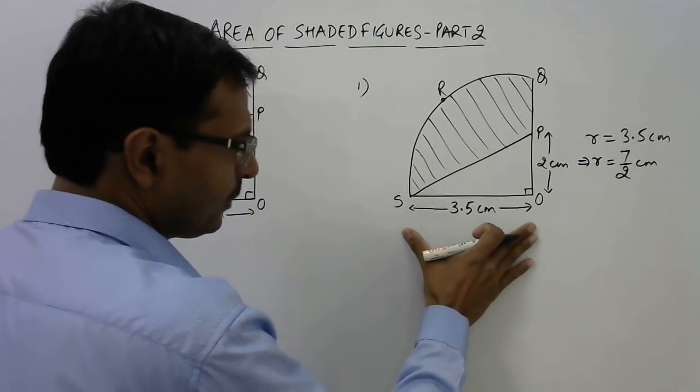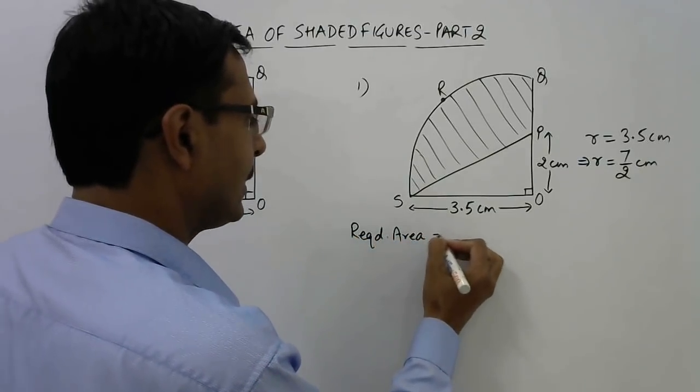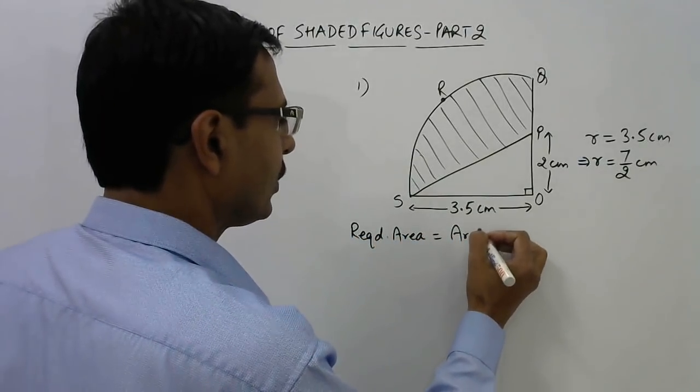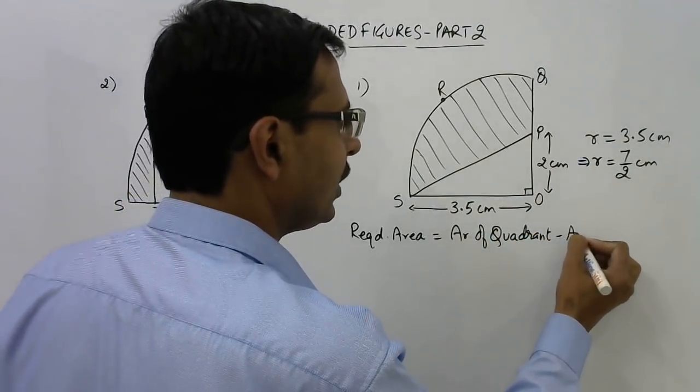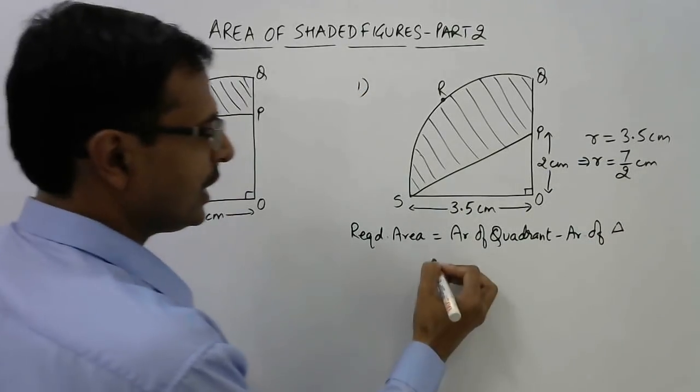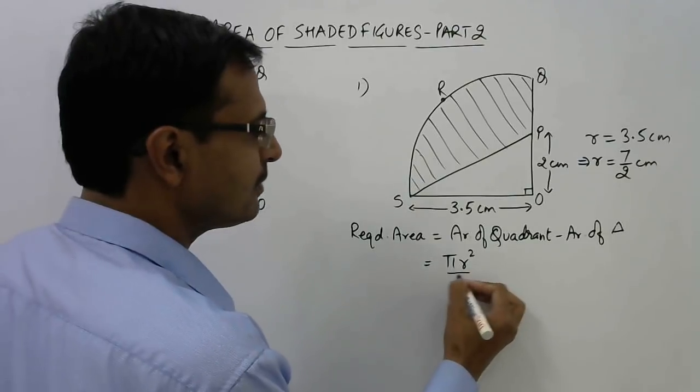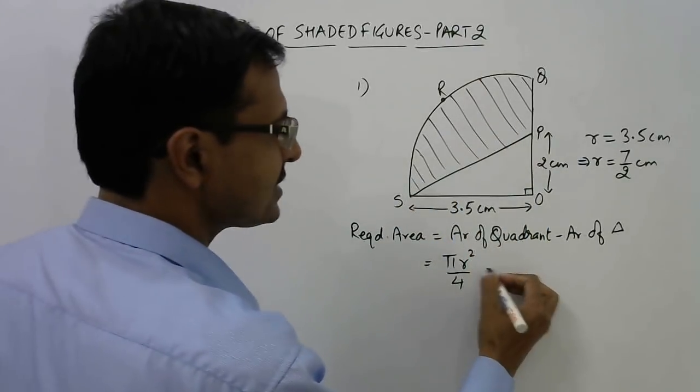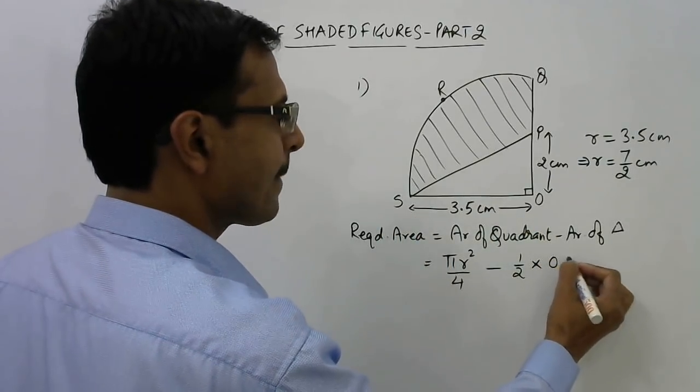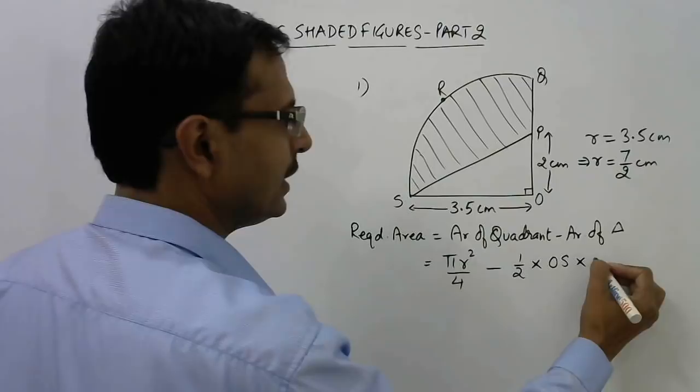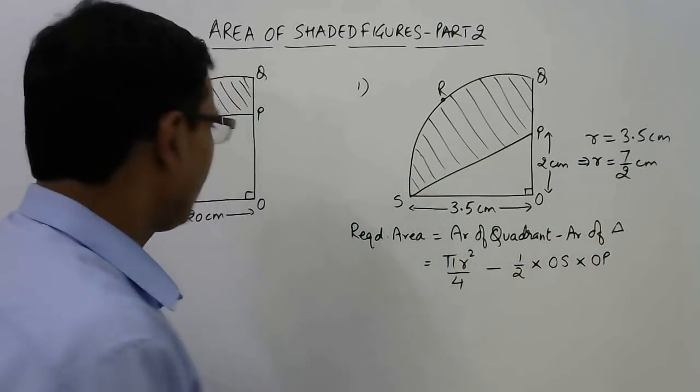You know the radius now, so required area is area of the quadrant minus area of triangle. Area of quadrant - if you know πr², this is the area of a circle, and you divide it by 4 you get the area of the entire quadrant. Then subtract the area of triangle, that is half into base OS into height OP. Both are given, so we can find the area of triangle very easily.